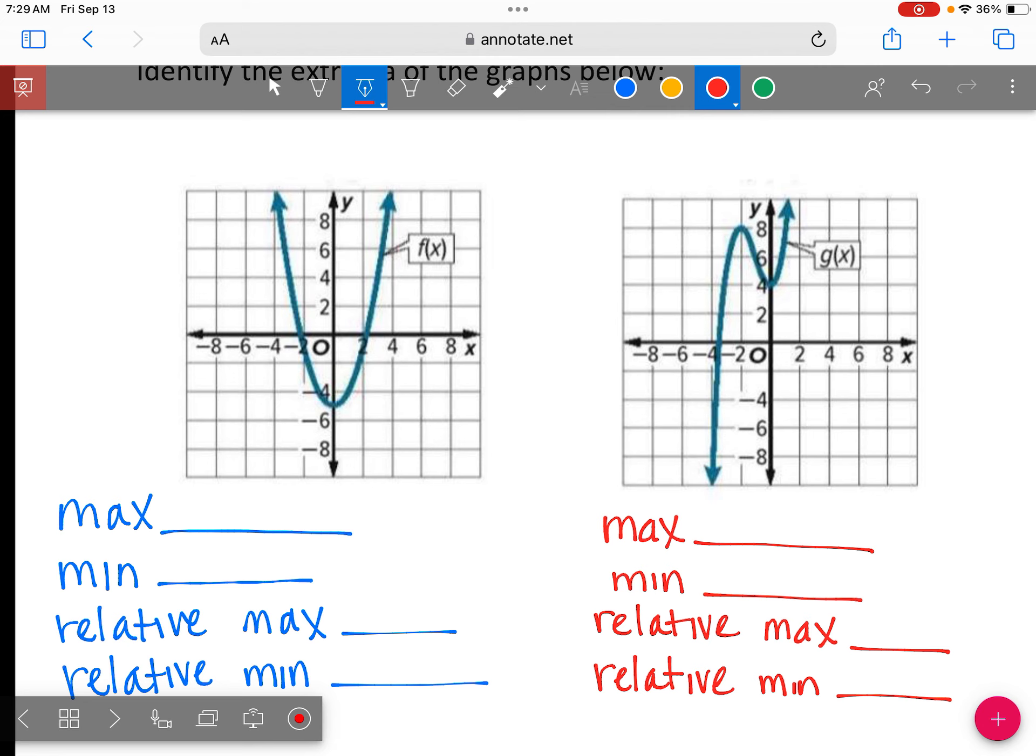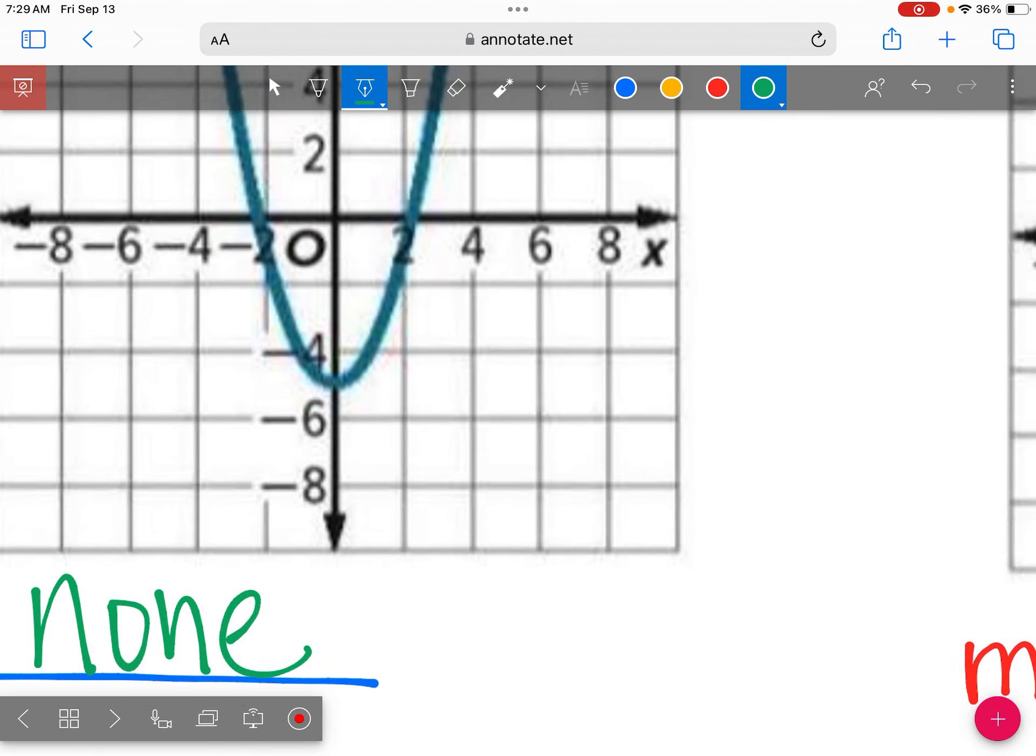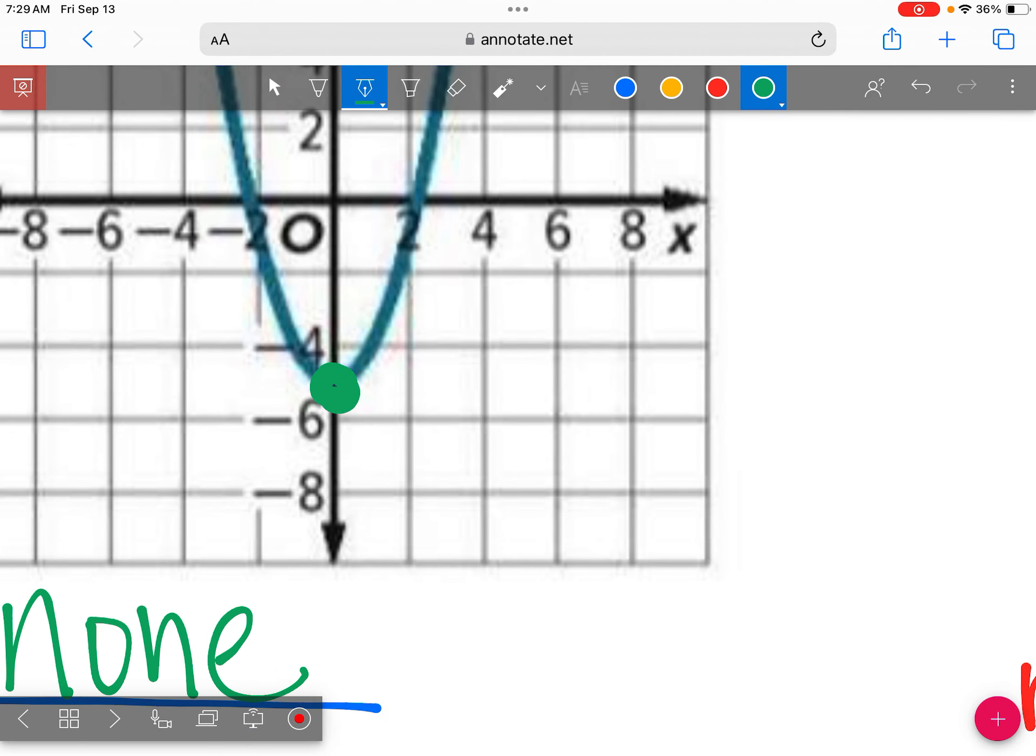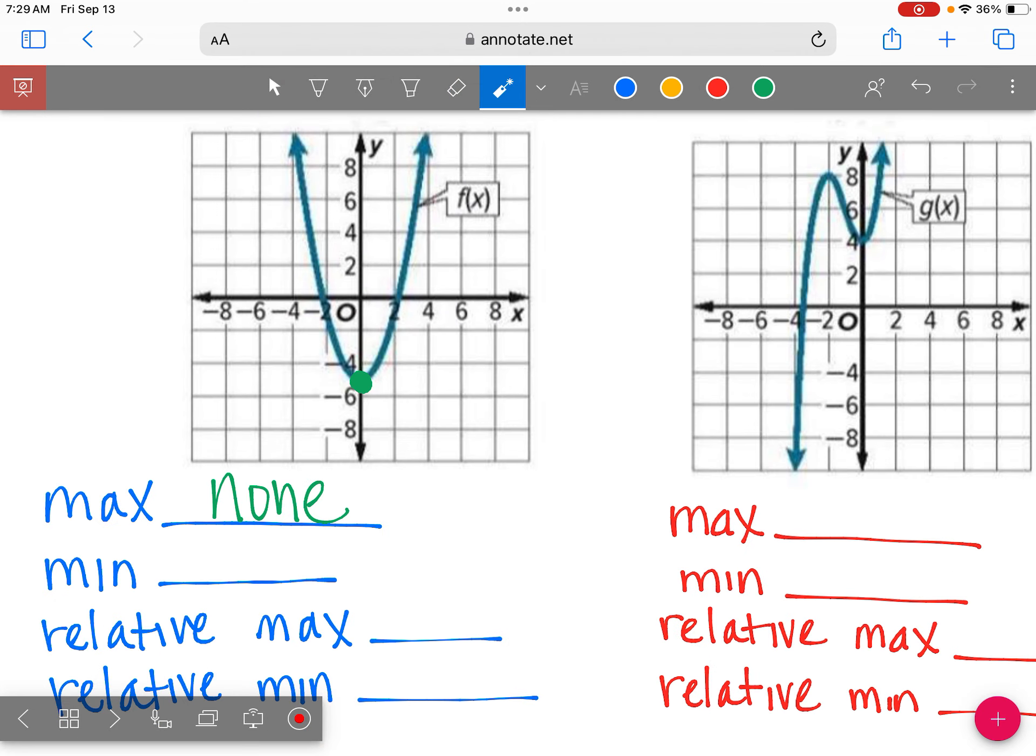So looking at this, do you see how we have two arrows pointing up? So that means that we don't have a max. We're going to say none. We don't have one of those. The lowest point on this graph is right here. I'm going to zoom in. So that would be our minimum. We don't have an arrow pointing down, so we do have a minimum. And that looks like it's halfway between negative four and negative six. So we'll say it's at zero, negative five.